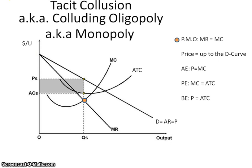When you are looking at the price that this colluding oligopoly would have, you take it up to the demand curve and that gives you the price. Allocative efficiency is producing that right mix of goods — the formula for that is price equals marginal cost. An oligopoly is never allocatively efficient. Productive efficiency is producing goods as cheaply as possible at minimum ATC — an oligopoly is never productively efficient. Because of the advertising and the different tactics that they use, an oligopoly will never break even, so they will never achieve price equals ATC.